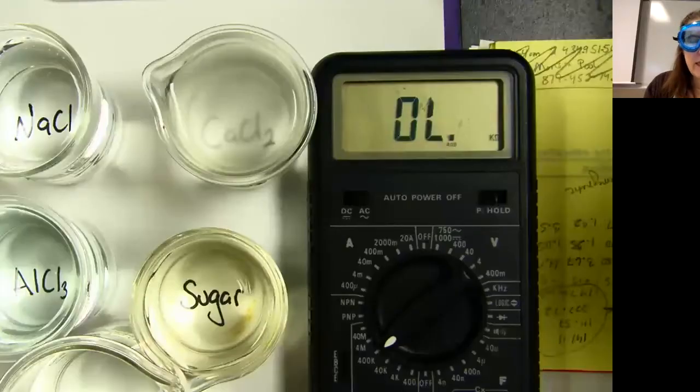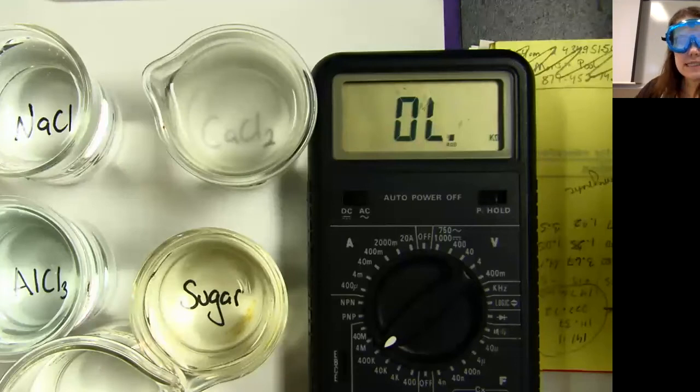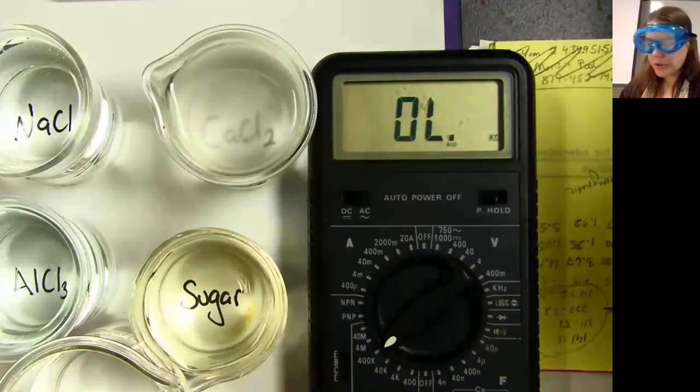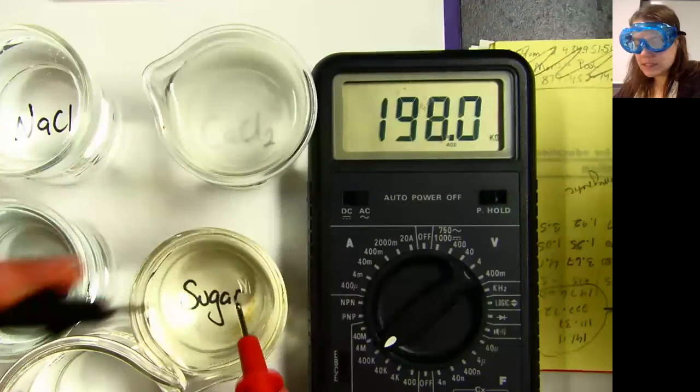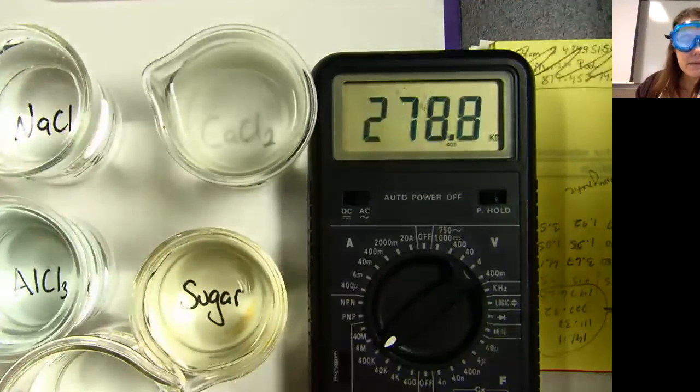So we were looking at how well these solutions conducted electricity, how well that electricity conducted through the solution in order to light up the light bulb. So we're going to see if we can try and quantify that. We're looking at resistance here. When we look at sugar, electrons don't go through. It's a high resistance. This is why it didn't really light up the light bulb. Electricity couldn't go through.